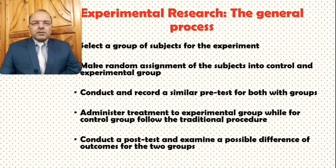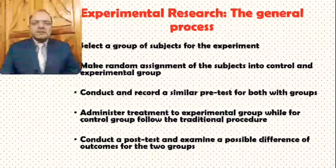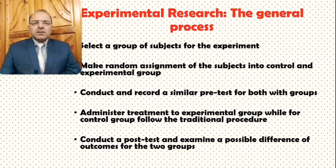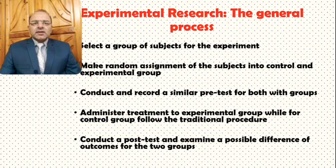The first thing generally that happens is that you select a group of subjects for the experiment. You are conducting this experiment for some reason, having already chosen the topic or issue and thought about the aims and objectives. After that, you select a group of subjects. Then you make random assignment of the subjects into control and experimental groups. Once you select the group, you also conduct and record a similar pretest for both groups.